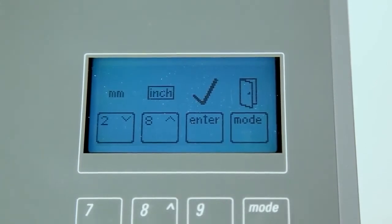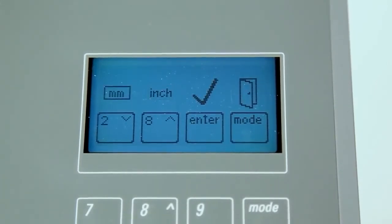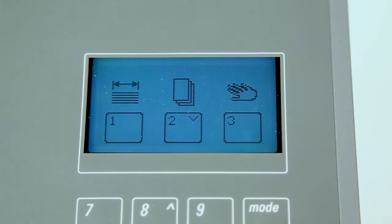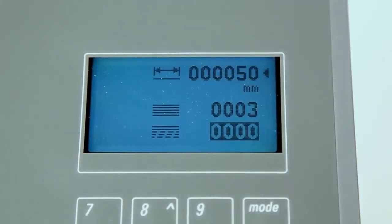Press the number 4 key. The boxed measurement is the current setting. Press the number 2 key for metric or the number 8 key for inch. Press enter to exit to the main screen. Press the number 1 key to return to the home screen.